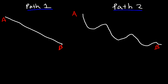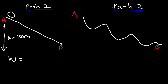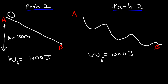The work done by a conservative force like gravity is going to be the same regardless of the path chosen. As long as the height difference between A and B is the same — let's say 100 meters — then the work done by gravity will be the same. So going from A to B, the work done by gravity will be 1,000 joules. The work done by gravity for path 2 will also be 1,000 joules. So the work done by gravity is independent of the path taken.